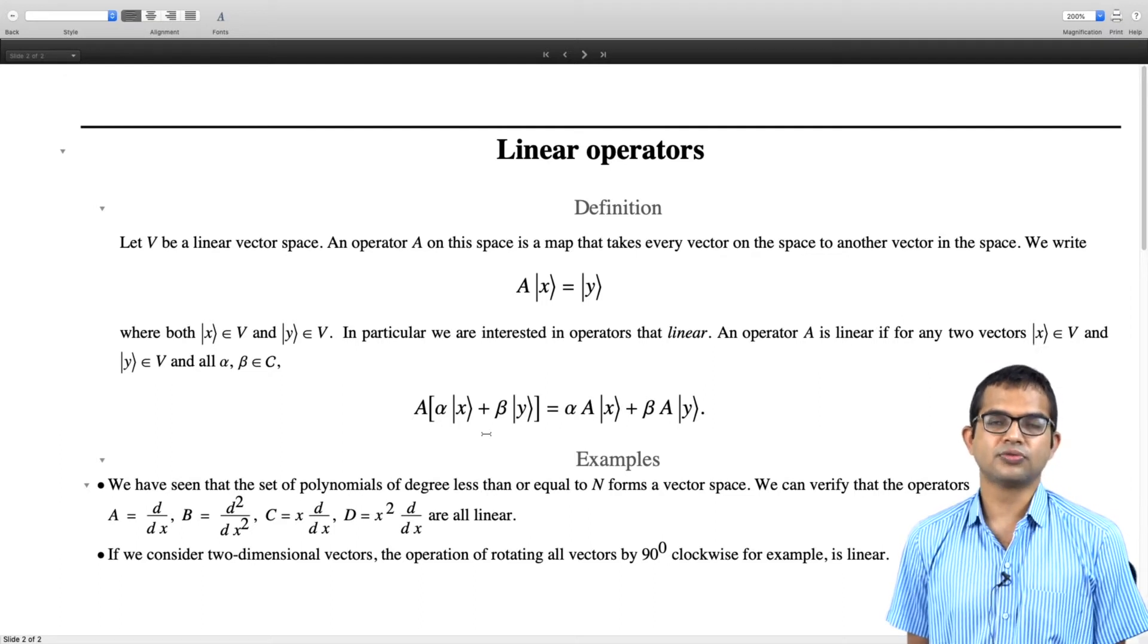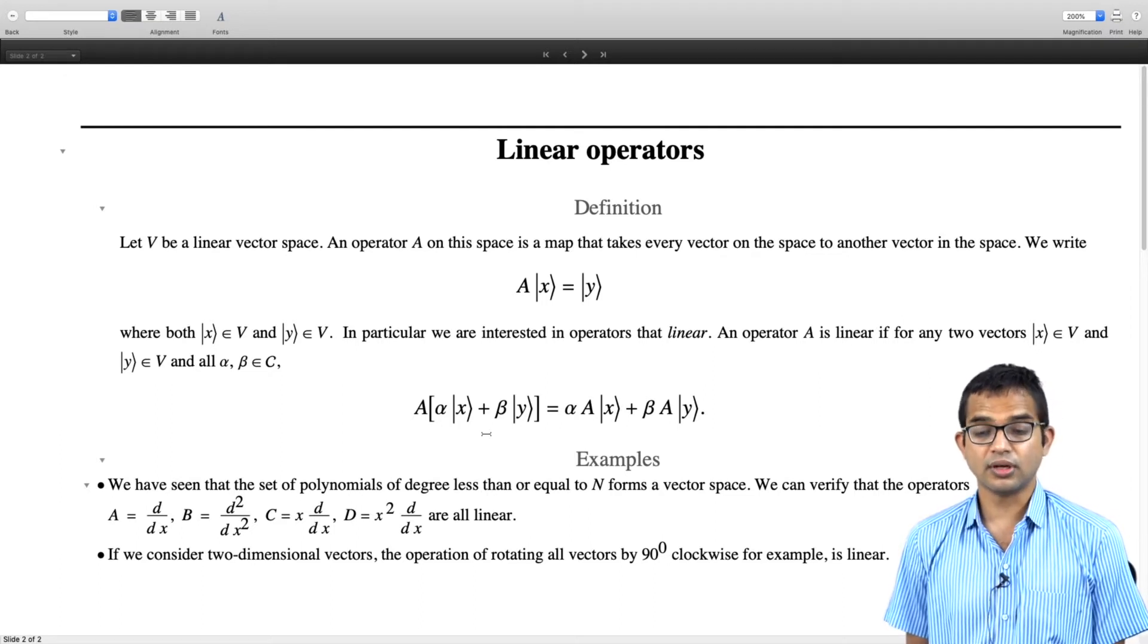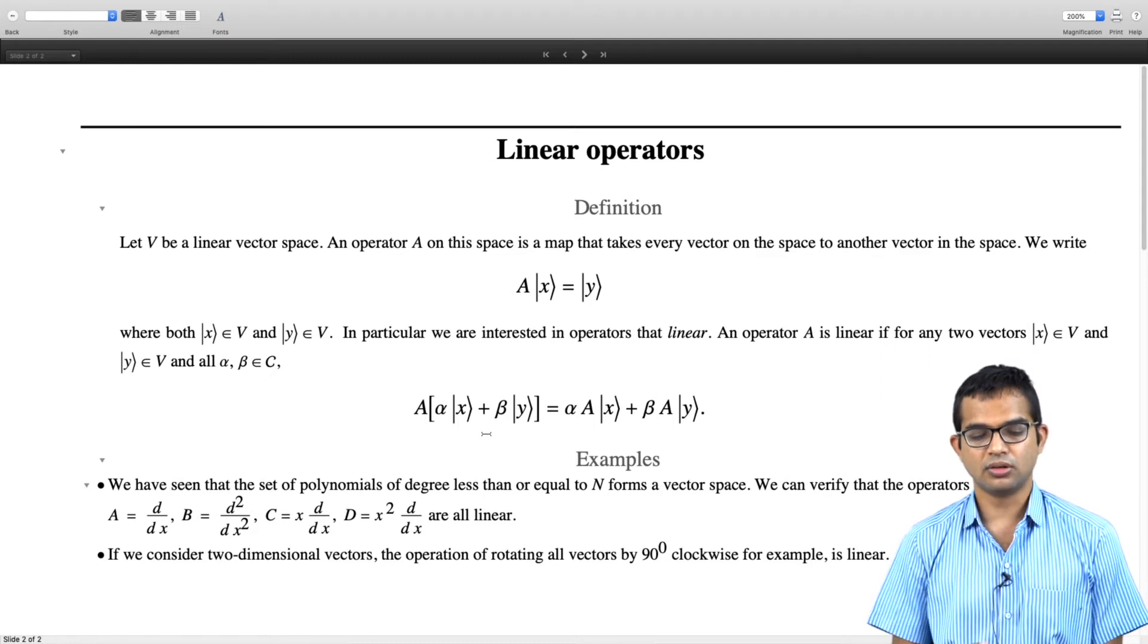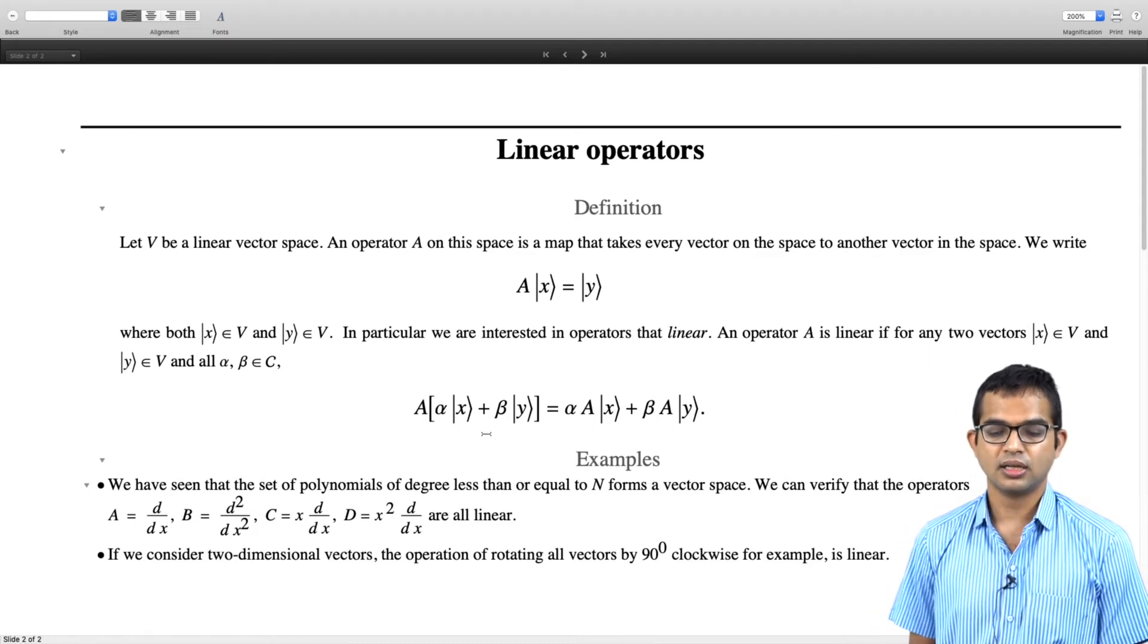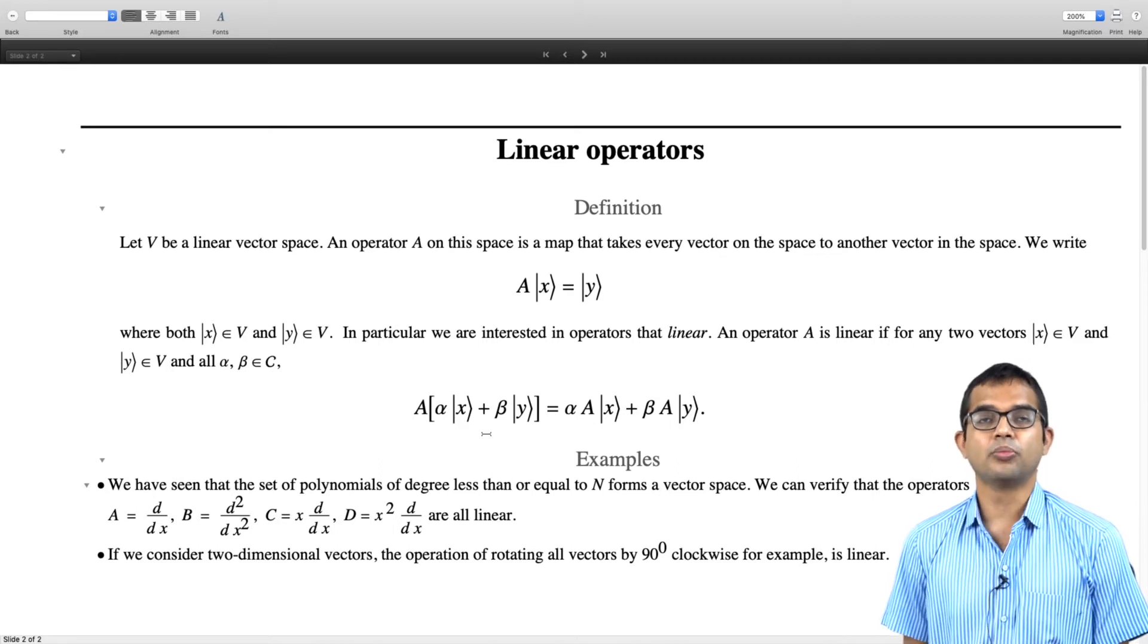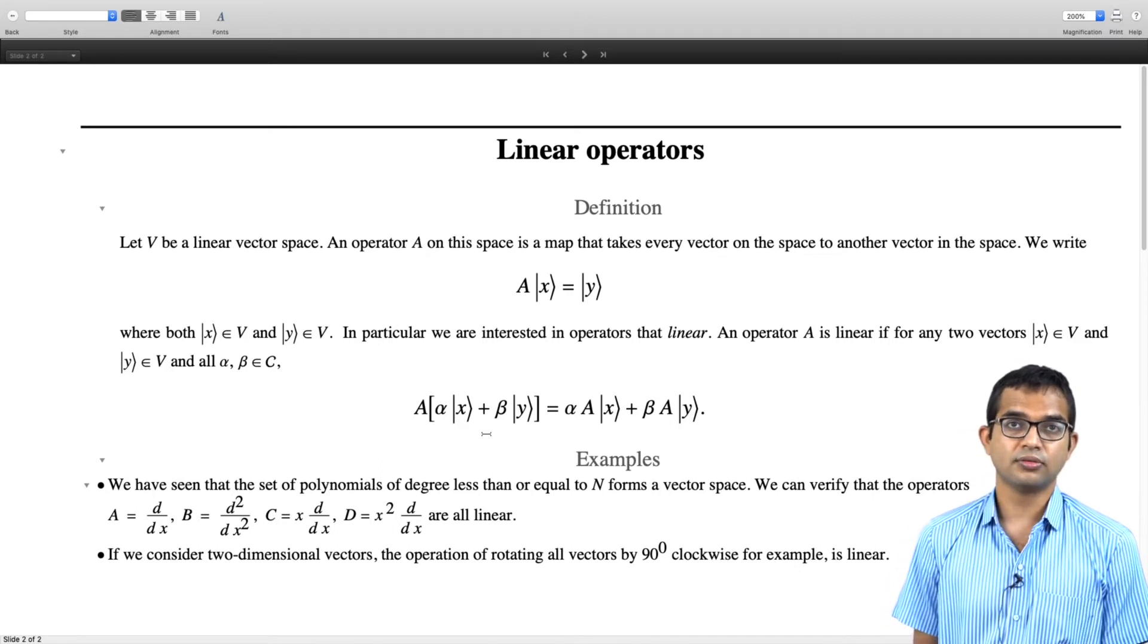If you take the derivative of this function, then you can verify using this property that it is a linear operator. The second derivative is also a linear operator. x times d by dx, x square times d by dx, all of these are linear operators as you should explicitly verify for yourself.